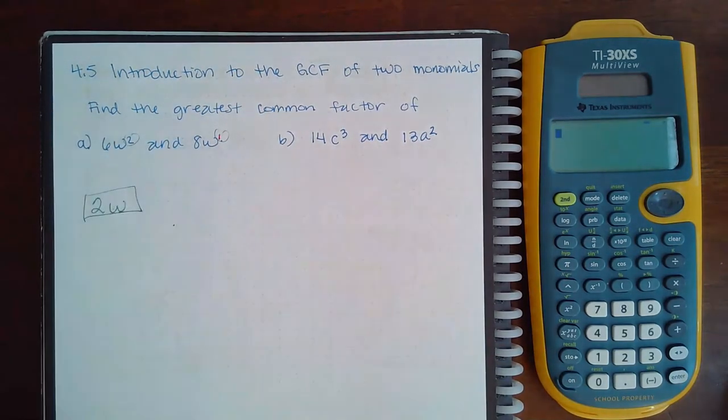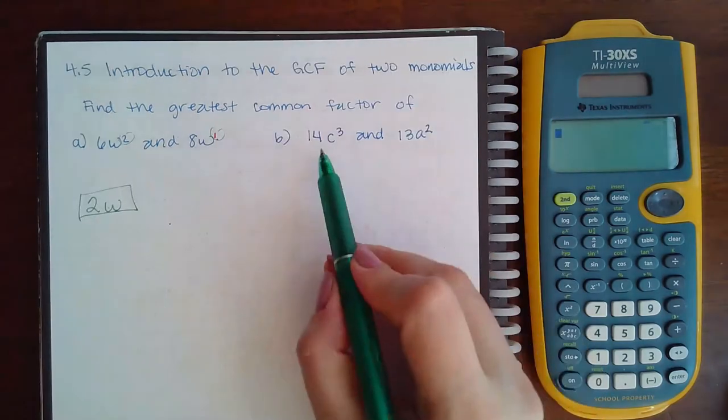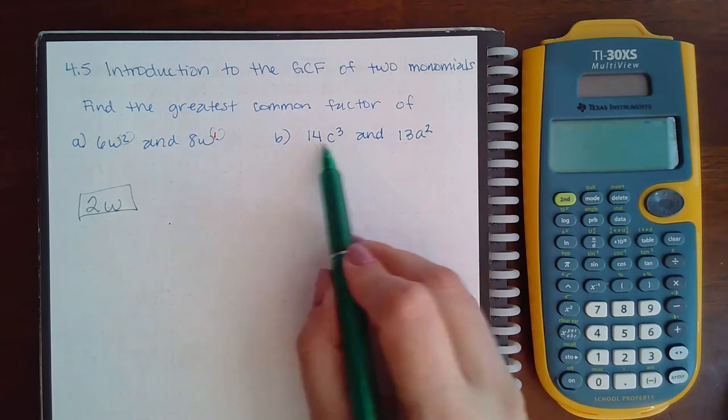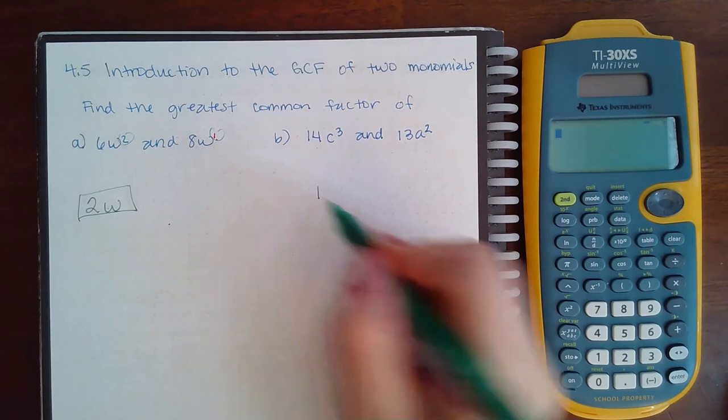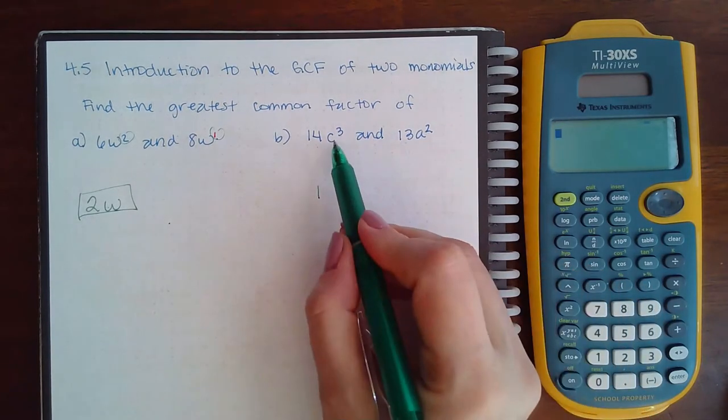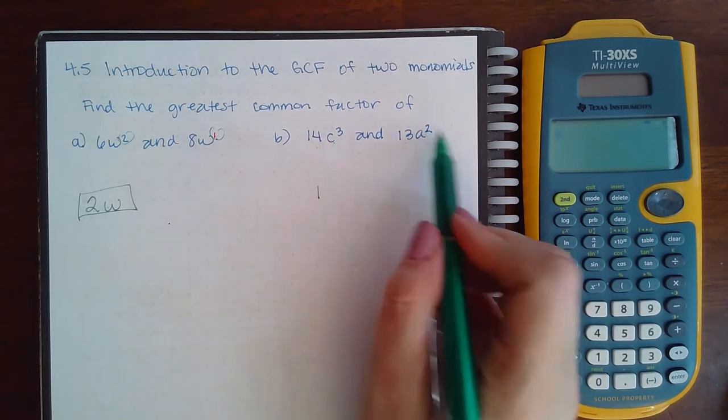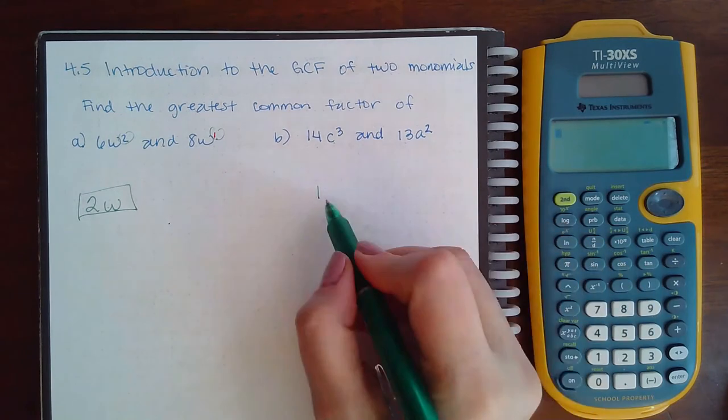14 and 13 do not have any factors in common, so I just have 1. And c³ and a³ do not have any factors in common either, so I will not have any variables.